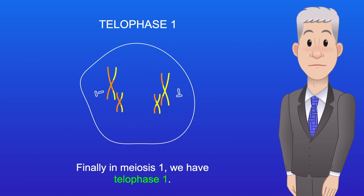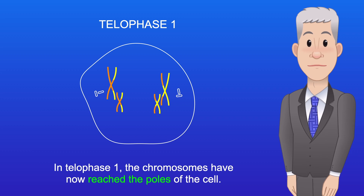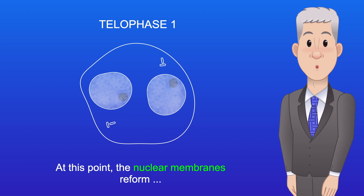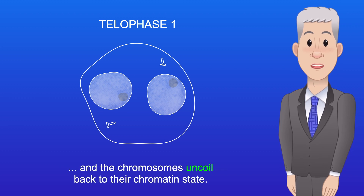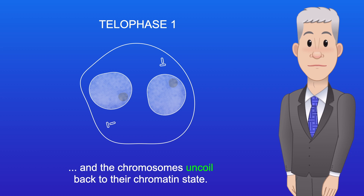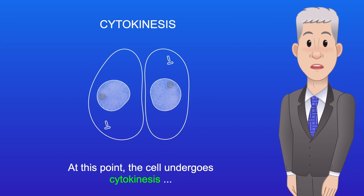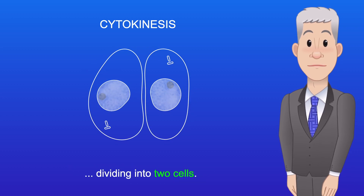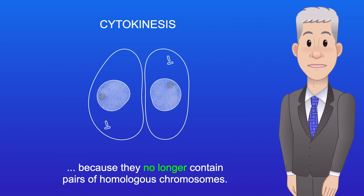Finally in meiosis I, we have telophase I. The chromosomes have now reached the poles of the cell. At this point, the nuclear membranes reform and the chromosomes uncoil back to their chromatin state. The cell then undergoes cytokinesis, dividing into two cells. These cells are haploid, because they no longer contain pairs of homologous chromosomes.